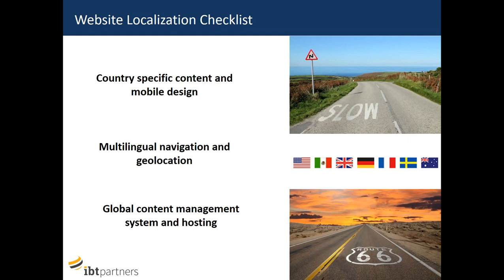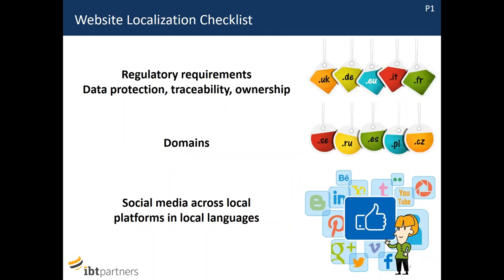On our localization checklist I would also put regulatory requirements. It is increasingly important to have absolute compliance with your local regulatory authorities on the web — covering authorship, ownership and traceability, and data protection. These vary according to different markets. After that, we really insist on domains. It's important that you own these country-specific domains — from .es for Spain to .de for Germany — and don't give them to a distributor or anyone else. These are important for your brand and long-term development. Finally, in terms of social media across local platforms and local languages — it's no good building a fantastic website and then parking it in an obscure garage.